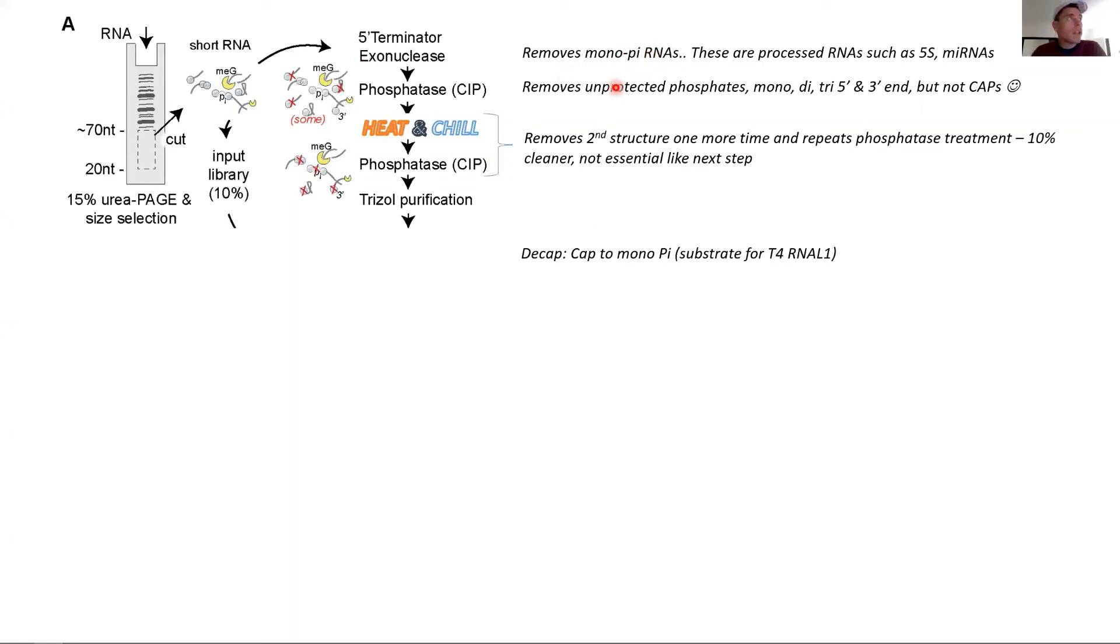Here's a quick reminder writing the enzymes down. The 5-prime Terminator removes the monophosphate—the phosphatase that removes and basically unprotected phosphates. It would not remove an adenyl group, it would not remove a cap, but it does remove a mono, di, or triphosphate. Then here we heat and chill and repeat the phosphatase by just using the same sample. This is different from the method video that we posted quite a while ago.